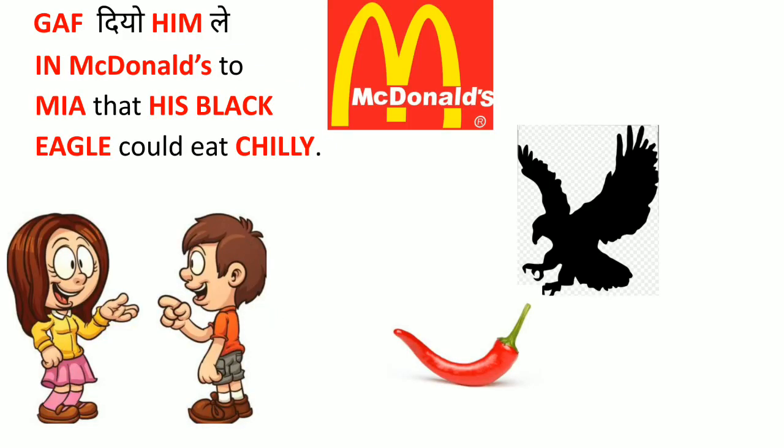I have divided the story into two parts. In the first part there was a guy who used to try to impress girls by taking them to big restaurants such as McDonald's. These girls were famous personalities such as Mia Khalifa and Britney Spears. He used his pet — a black eagle — to impress those girls, saying his black eagle could eat chili. So: Gauf dio him lay in McDonald's to Mia, saying his black eagle could eat chili.